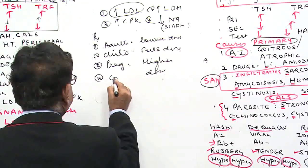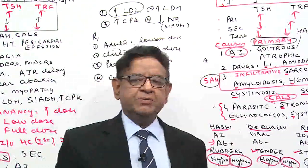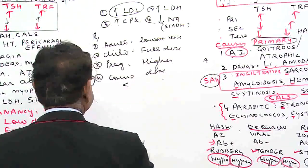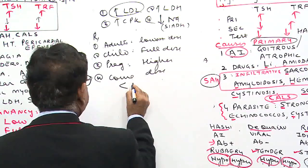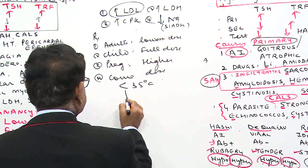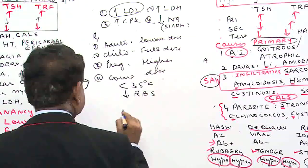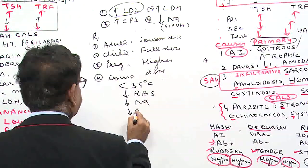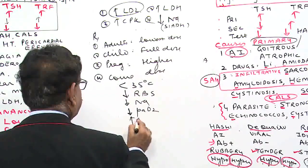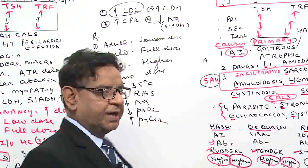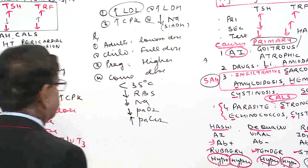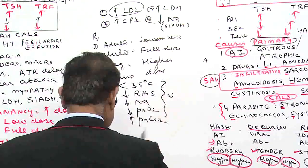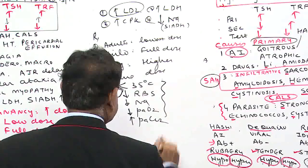Myxedema coma is an extreme form of hypothyroid. The patient has hypothermia — temperature may be less than 35 degrees centigrade — reduced glucose level, severe hyponatremia, severe hypoxia, and hypercapnia due to hypoventilation. All these lead to the patient becoming unconscious — the patient is in a coma, what we call myxedema coma.